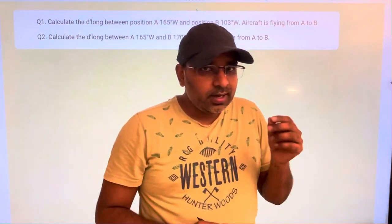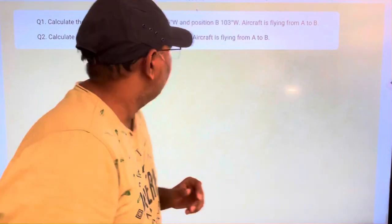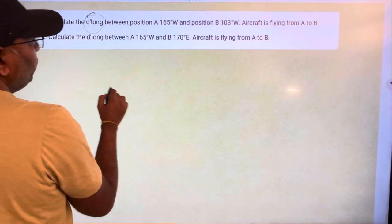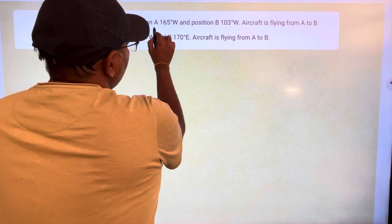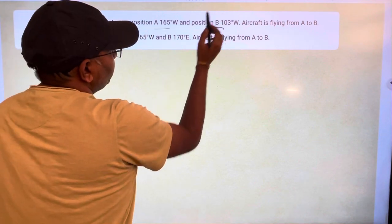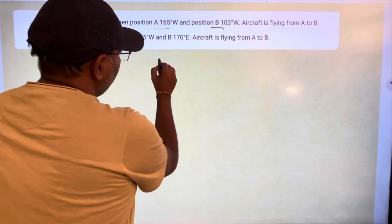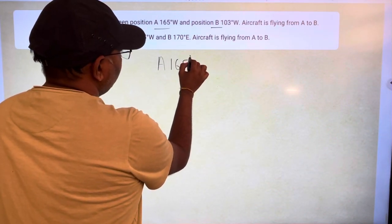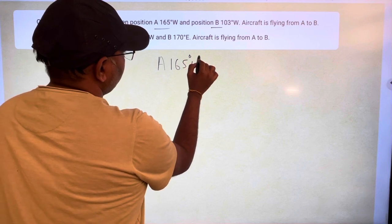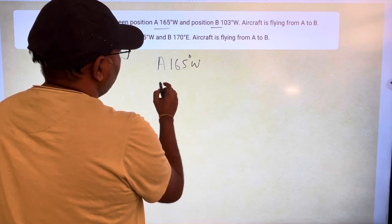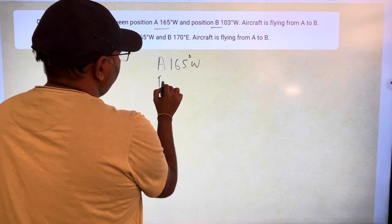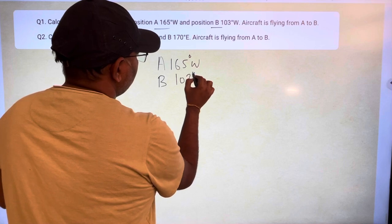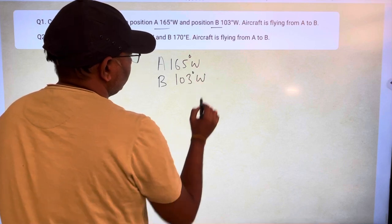This question is asking to calculate the D-long between position A and B. A is 165 degrees towards west and position B is 103 degrees towards west.